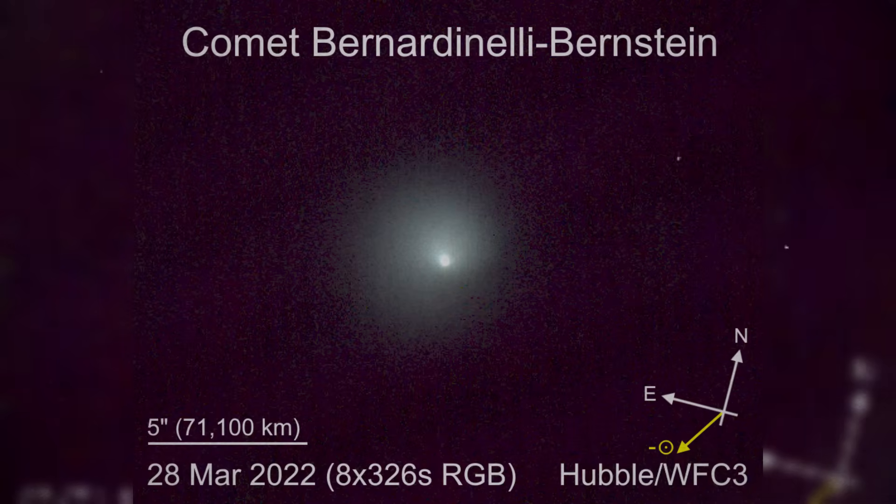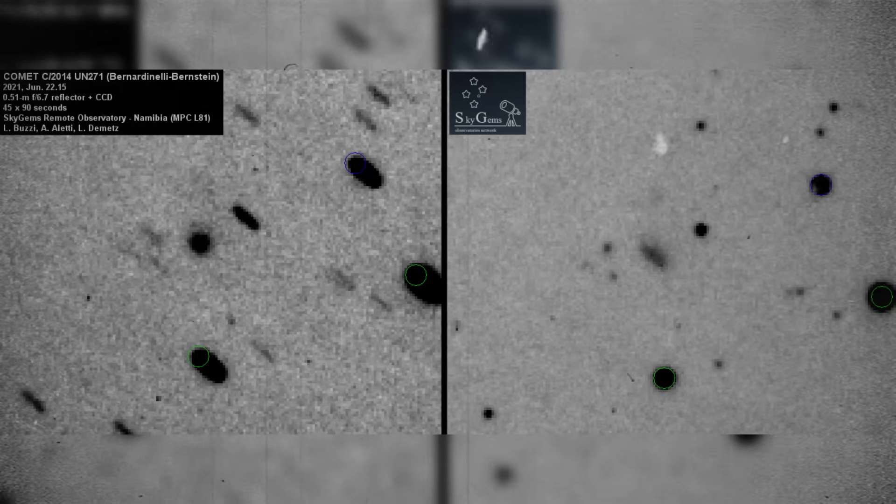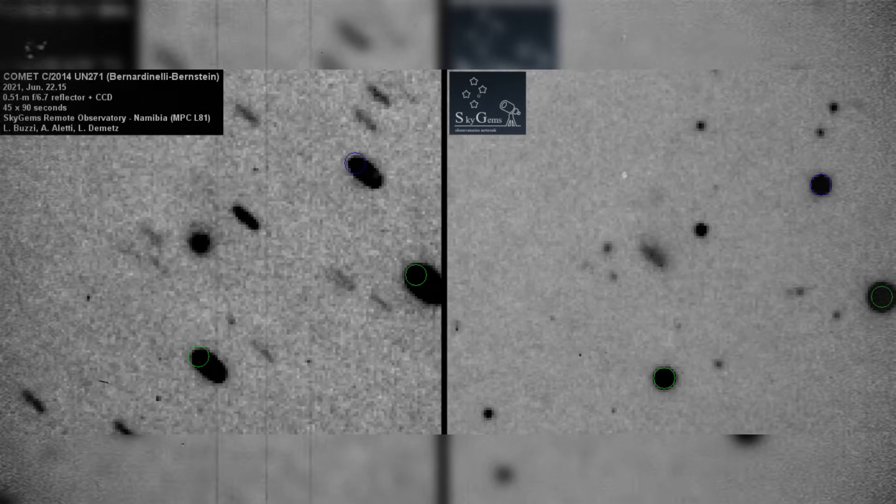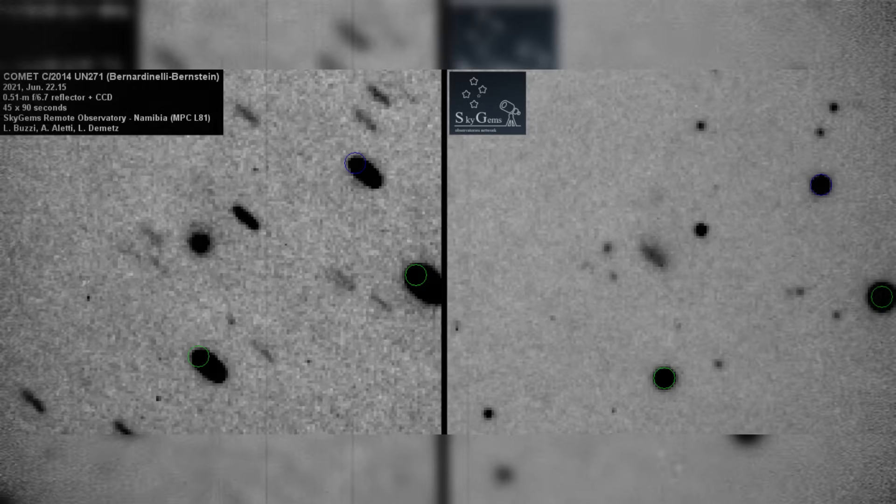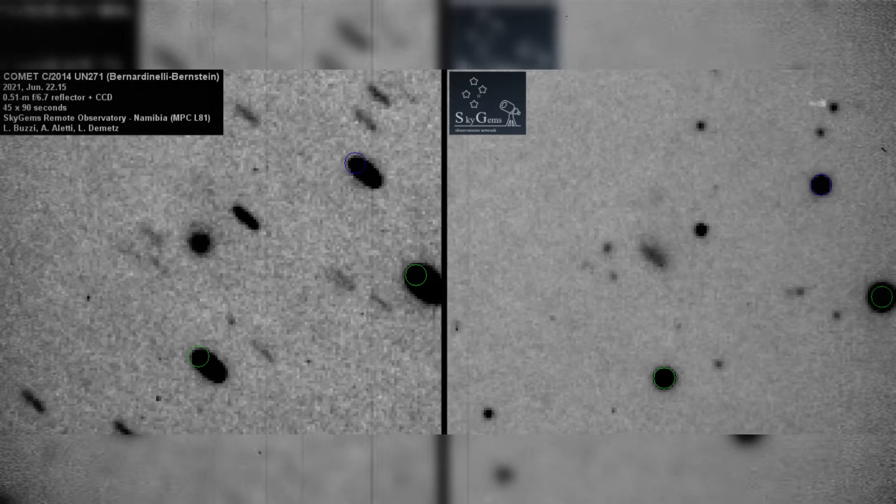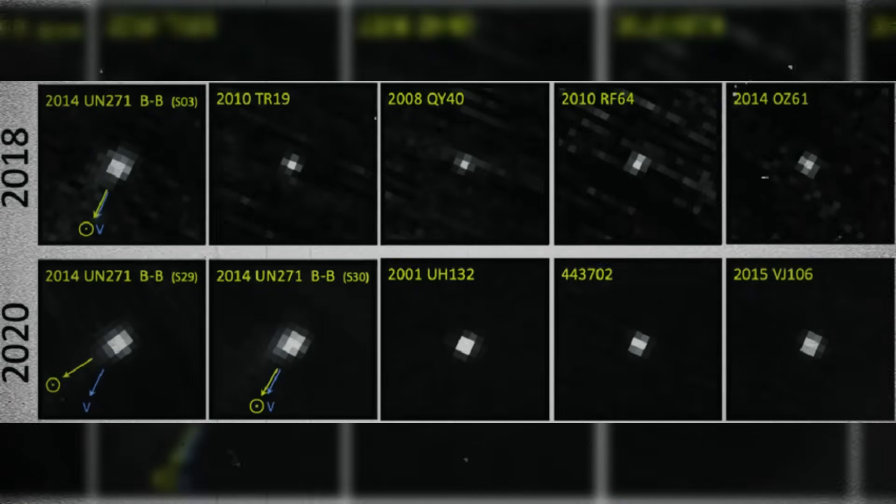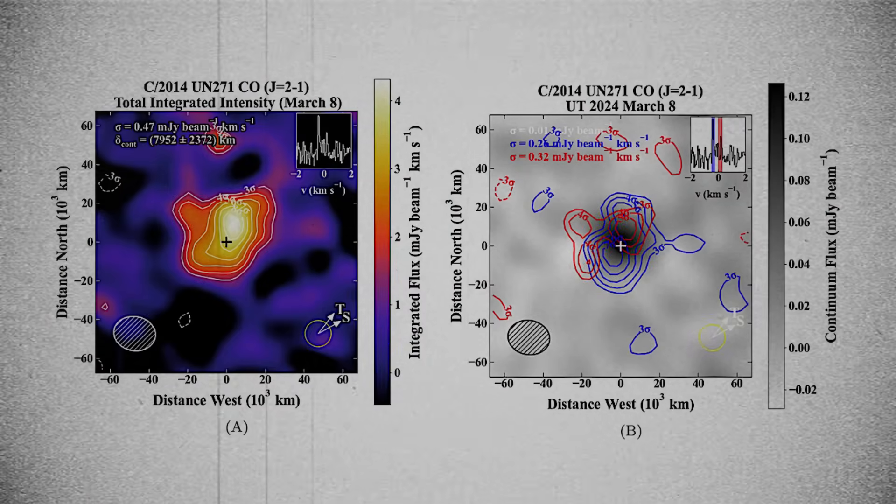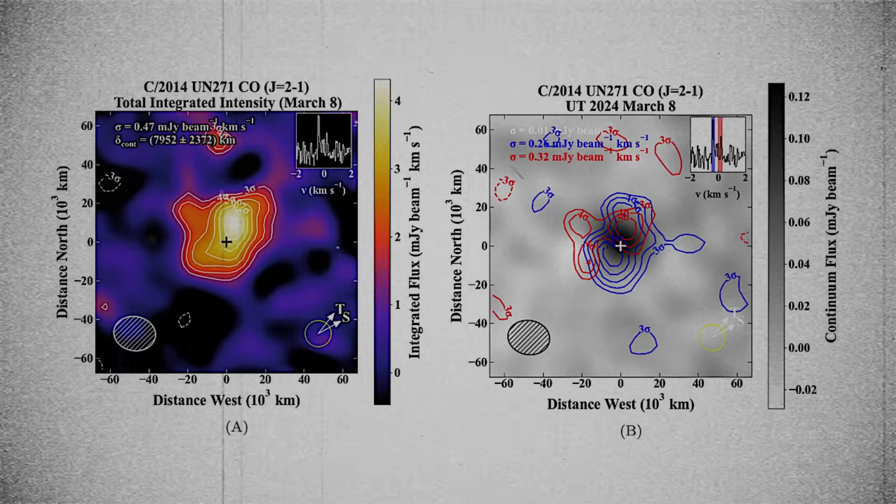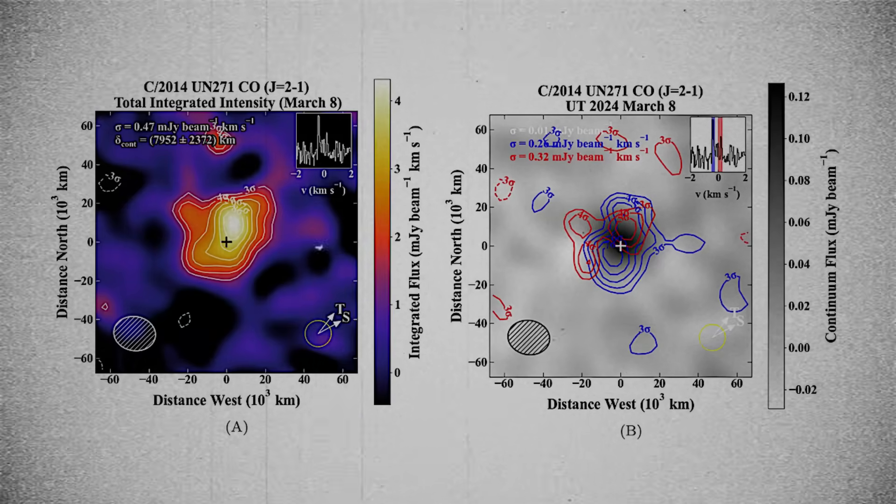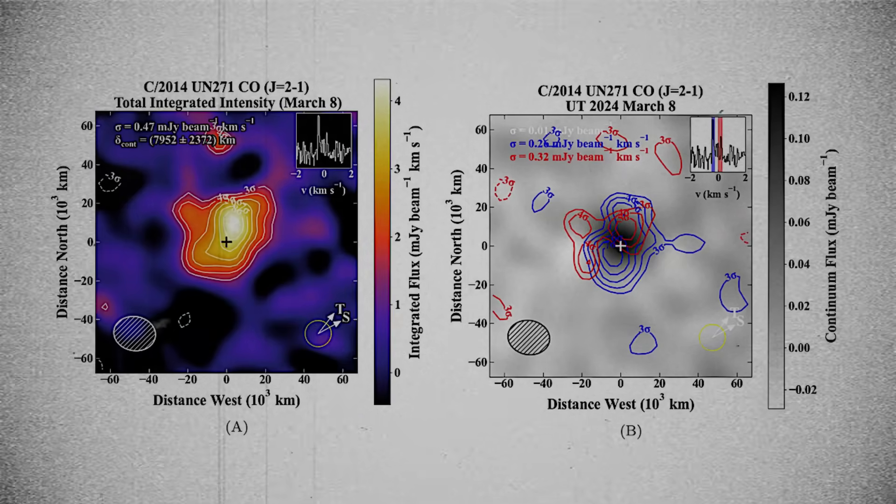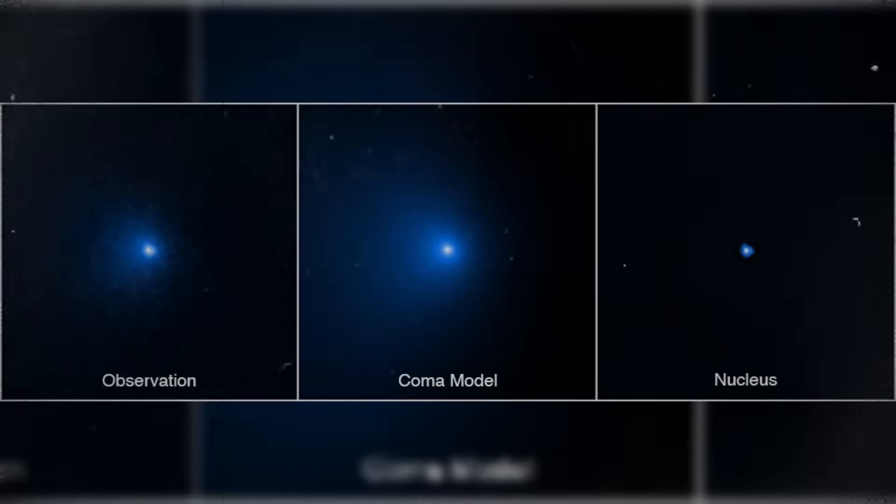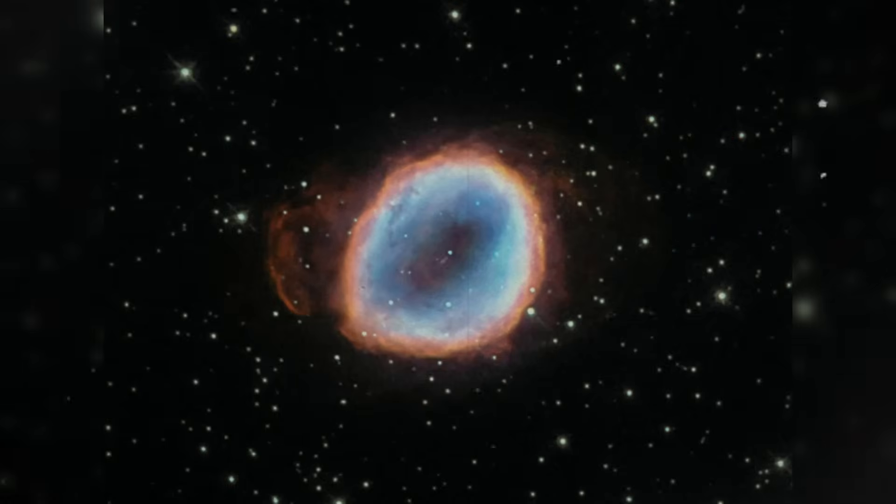Instead of behaving like a slow frozen monolith drifting quietly through the outer regions, UN271 is showing signs of internal activity far earlier than expected. Thermal imaging collected over the past observation window shows a surface that is warmer than baseline predictions. Objects this far from the sun should remain locked at extremely low temperatures with minimal surface change. Yet the data reveals patches of elevated heat aligned along a shallow arc near the equator. This thermal arc is consistent across multiple measurements, suggesting it is not an artifact of instrument error or reflected light. Something beneath the crust is producing or releasing energy.